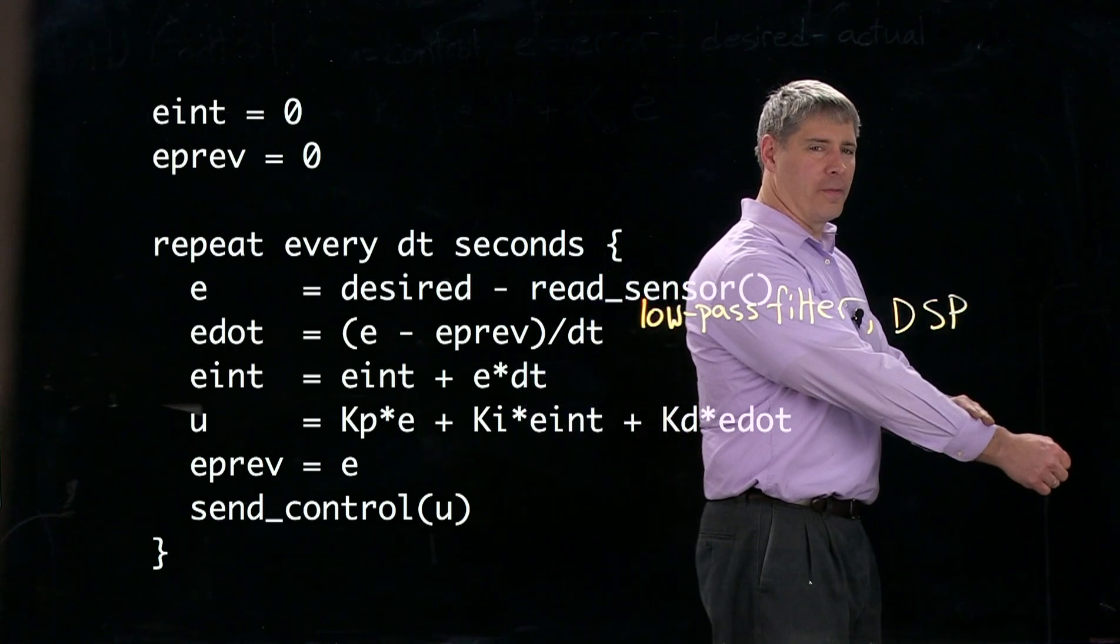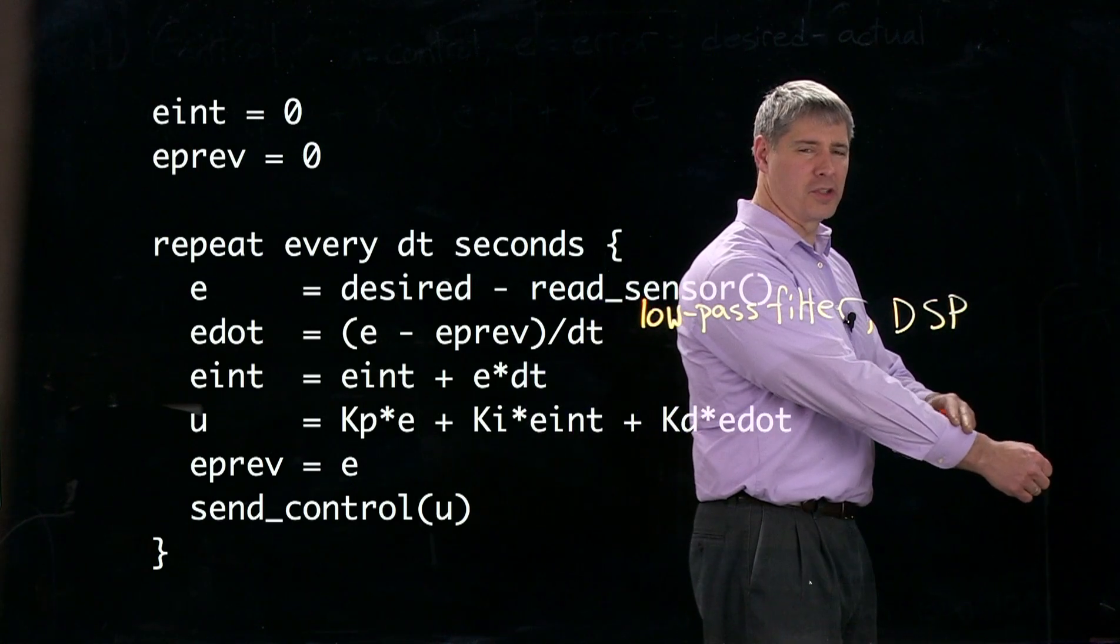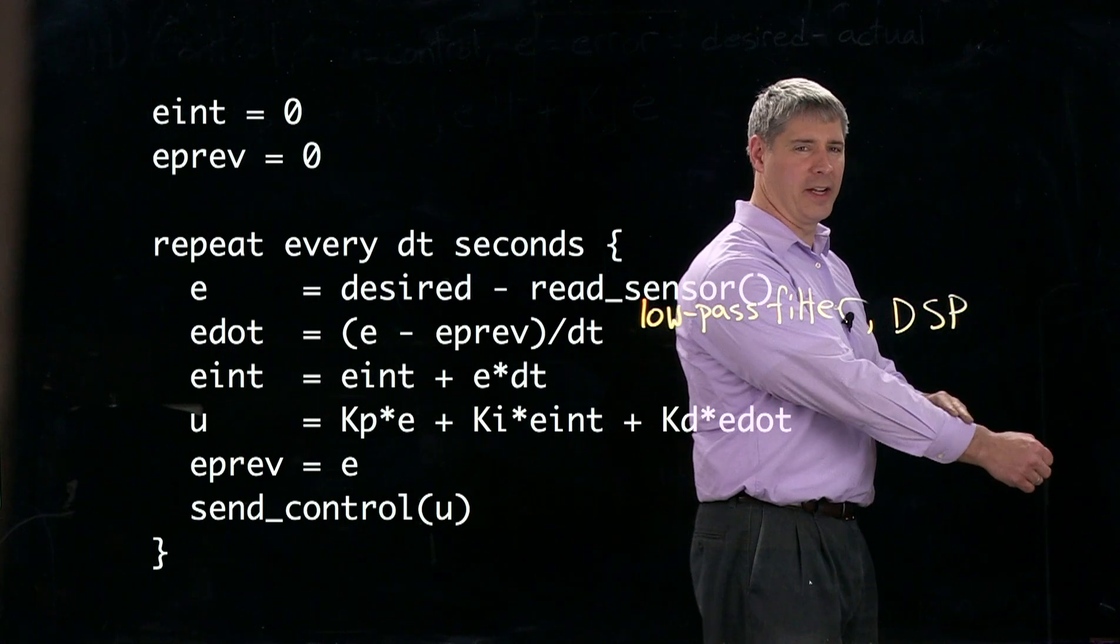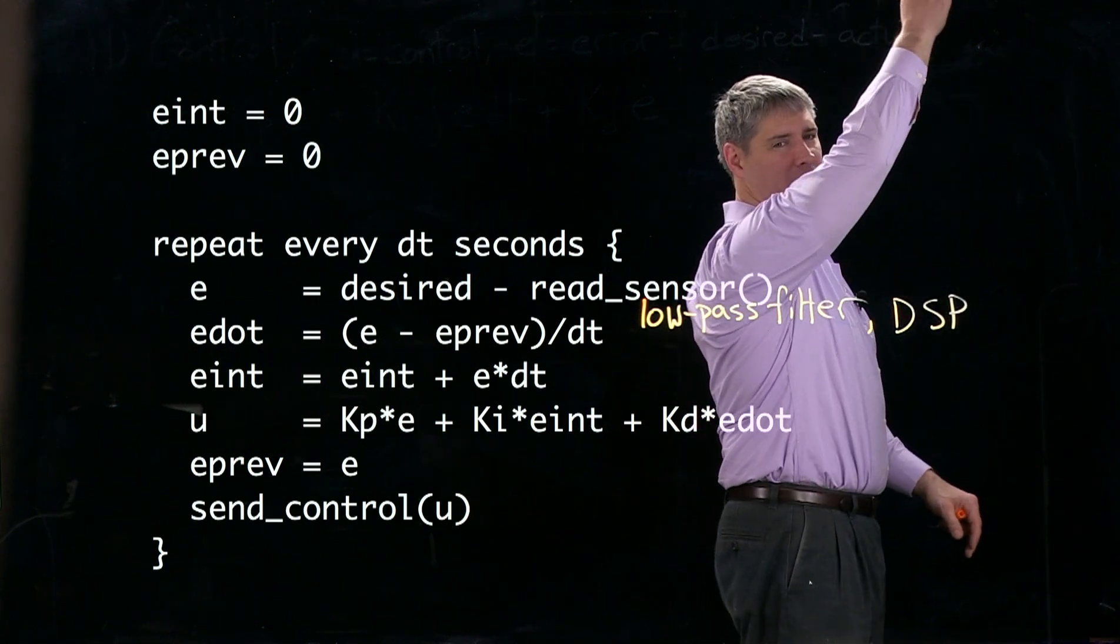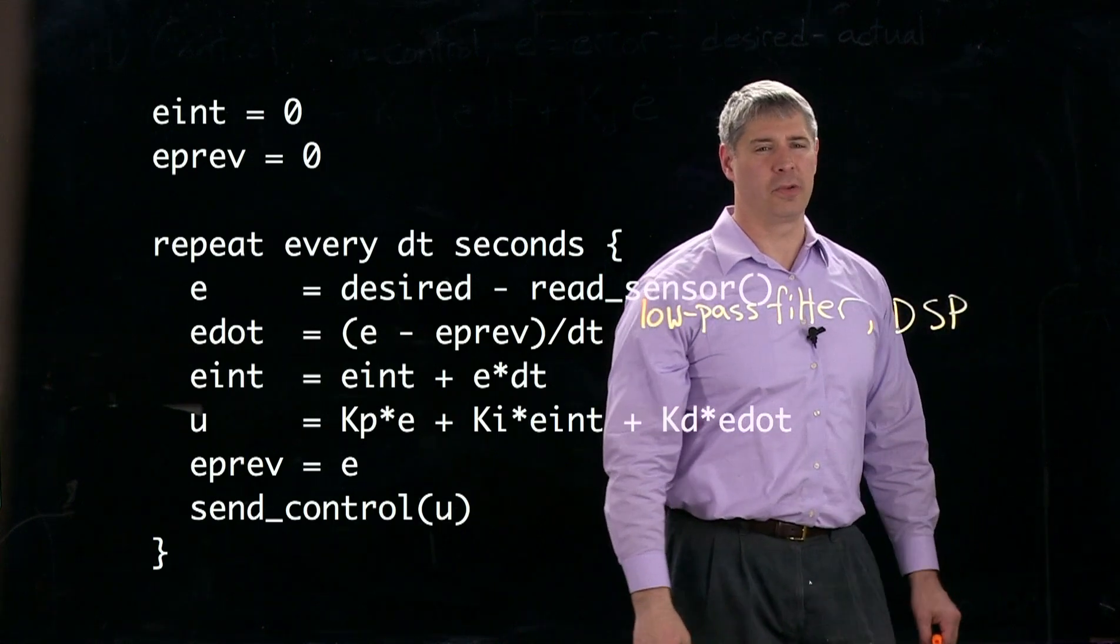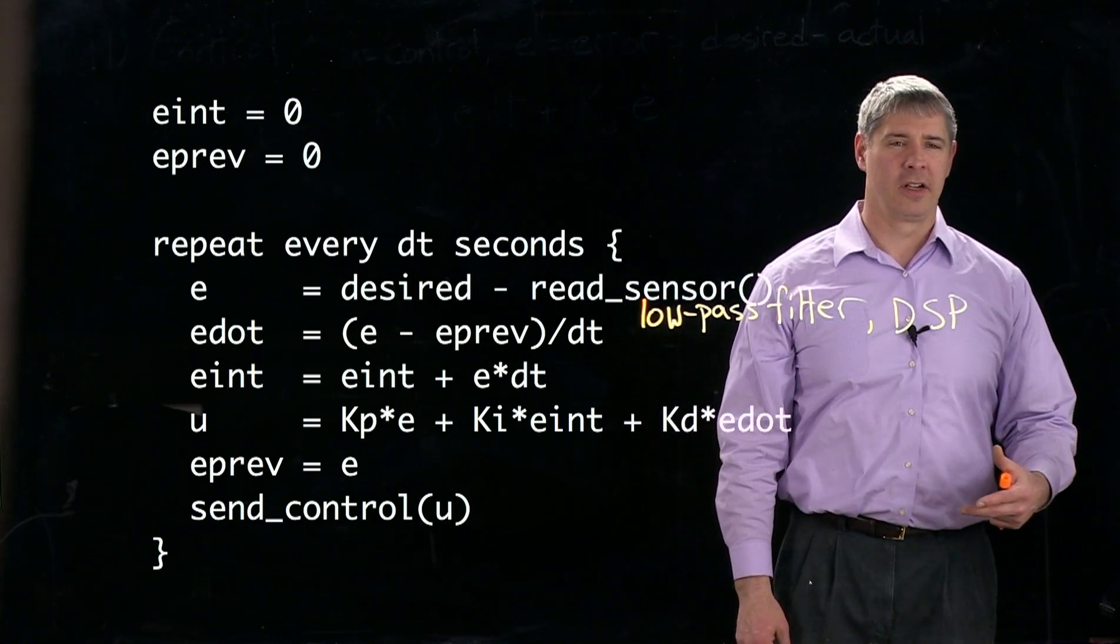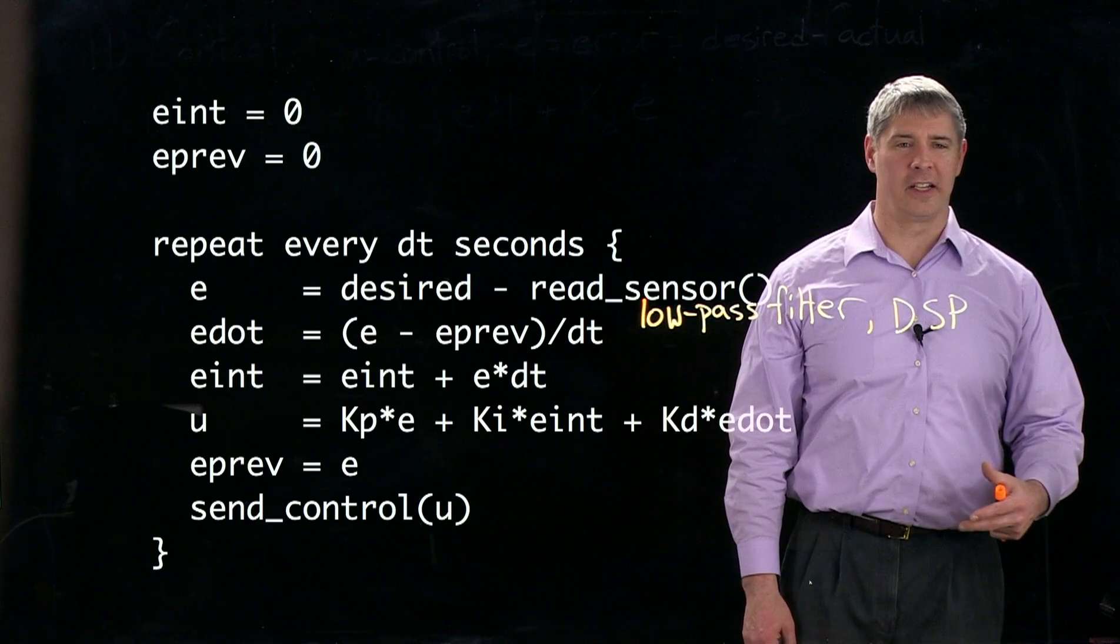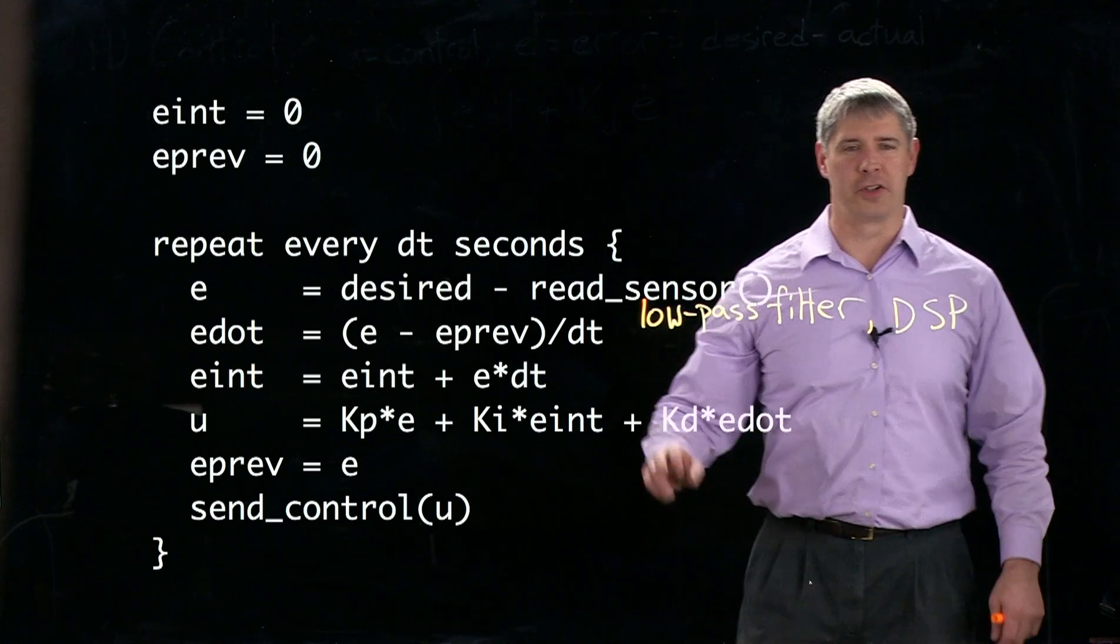and then when you let go of the arm finally, it's going to use all that torque to try to get rid of that integrated error, and the arm is going to overshoot and perhaps oscillate wildly. So in practice, you want to limit how much integral error there actually is to prevent this wild overshoot effect.